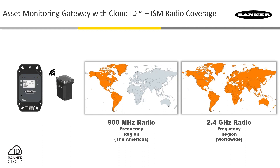Choosing which ISM radio frequency you intend to use comes down to two factors. The first is the regulatory compliance for use of that frequency in the region of your deployment. The second is the desired wireless range of the radios. Generally speaking, our 900 MHz products can be used in the Americas and have a wireless range of up to 2 miles line of sight when working with internal antennas.